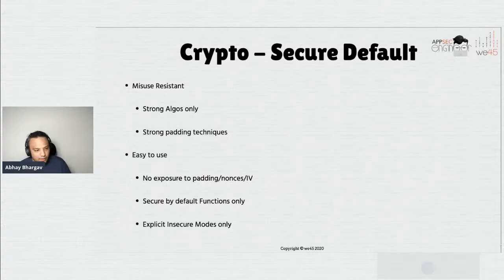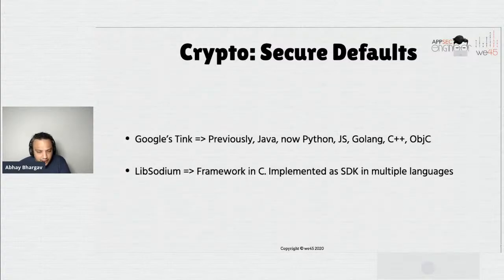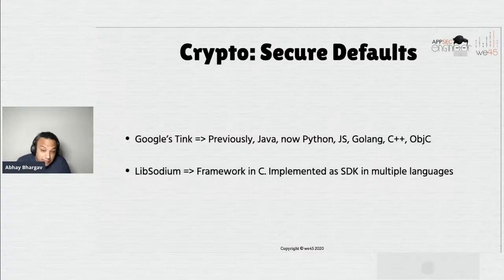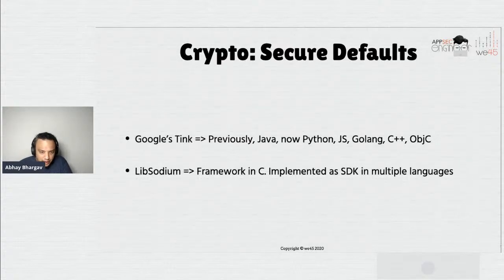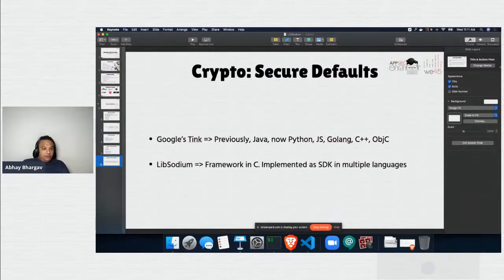Two libraries really help us do that. Google Tink was previously only a Java library but now has support for Python, JavaScript, Go, C++, and Objective-C. LibSodium is an older library implemented in C but has ports in multiple languages. I'm going to look at the Python port, which is called PyNaCl — N-A-C-L — and we're going to see how that works.